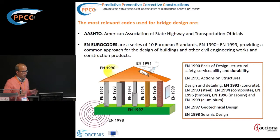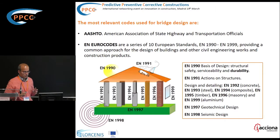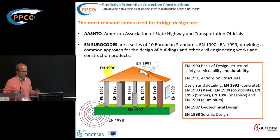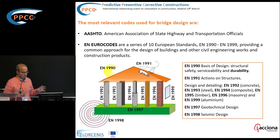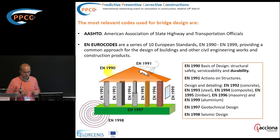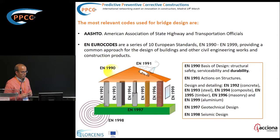The most relevant codes for bridges mainly are the American ones and also the Eurocodes. The Eurocodes consist of ten different European standards. As you can see in the scheme, there are two general Eurocodes: the 1990, which is the basis of design — structural safety, serviceability and durability — which is the key point here in this workshop.